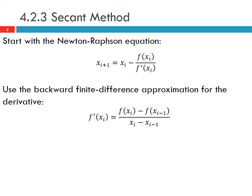The backward finite difference approximation says that f'(x_i) can be approximated by [f(x_i) - f(x_{i-1})] divided by [x_i - x_{i-1}]. We'll see this graphically shortly.